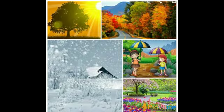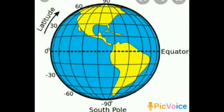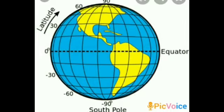Why do the seasons change, and why are climates different? The earth is round in shape and is always moving around the sun. Imagine a circle going around the middle of the earth like a belt — this imaginary circle is called the equator. The equator is an imaginary line around the middle of the earth that divides it into two equal halves: the northern hemisphere and the southern hemisphere.